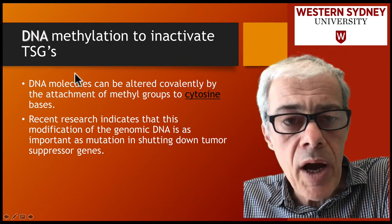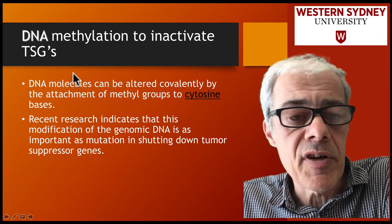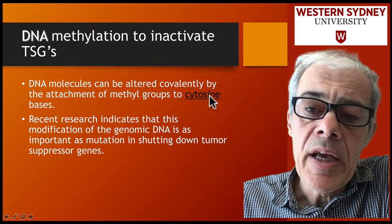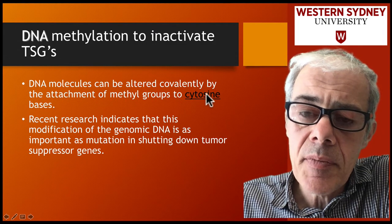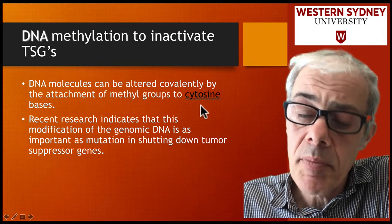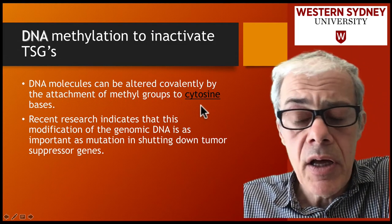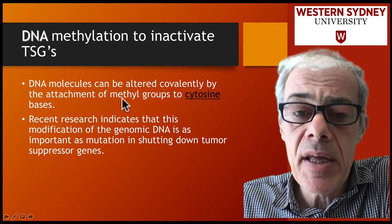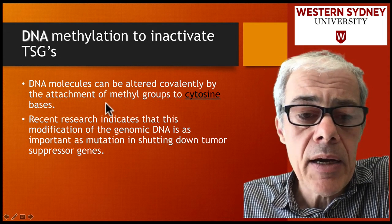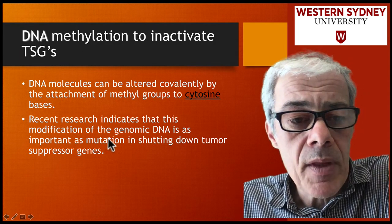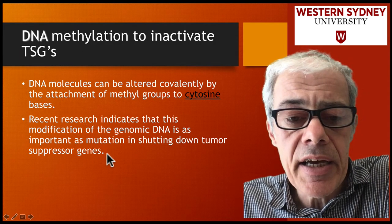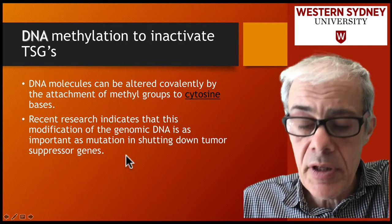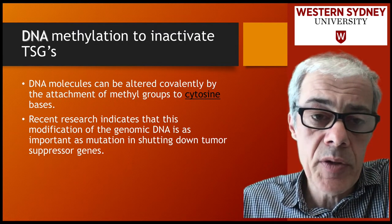DNA methylation involves the cytosine bases — one of the four base types in DNA. Cytosine can be methylated, and heavily methylated DNA in the promoter region of a gene can reduce the activity of that promoter.